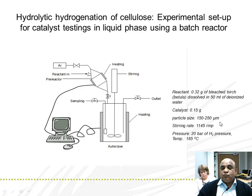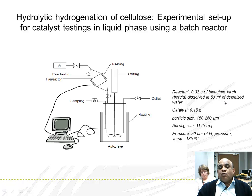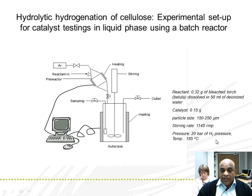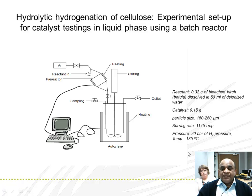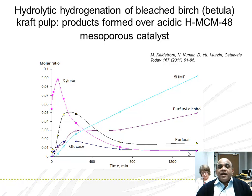150 to 250 microns. The reactant used was industrial bleached birch (Betula) kraft pulp dissolved in 50 mL of deionized water. The pressure used was 20 bar using hydrogen, and the testing temperature was 185°C.